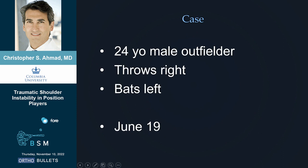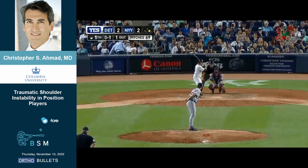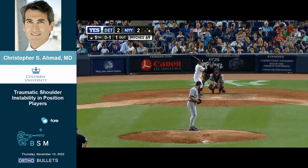Let's start with this gentleman. He's 24 years old, an outfielder. He throws right and bats left. Why is that important? His right shoulder is his lead shoulder hitting, under some stress. We're going to consider treatment based on how to get him back to play. Seasonal timing is important — this is June, so it's the middle of the season.